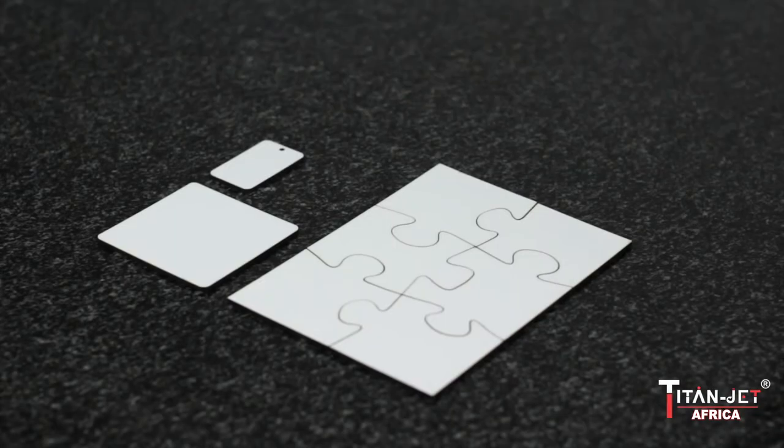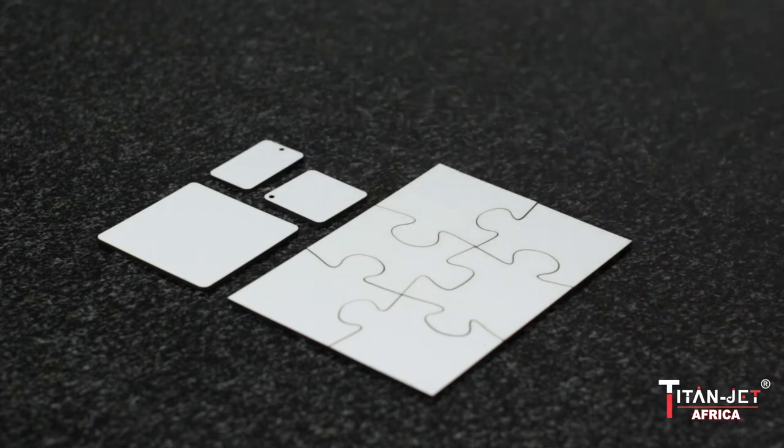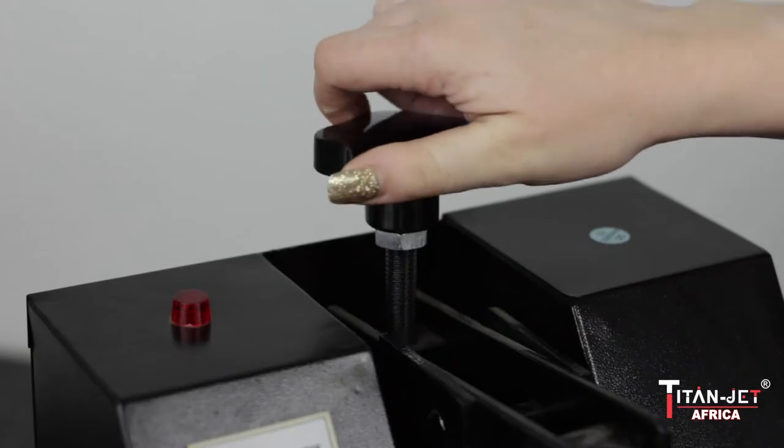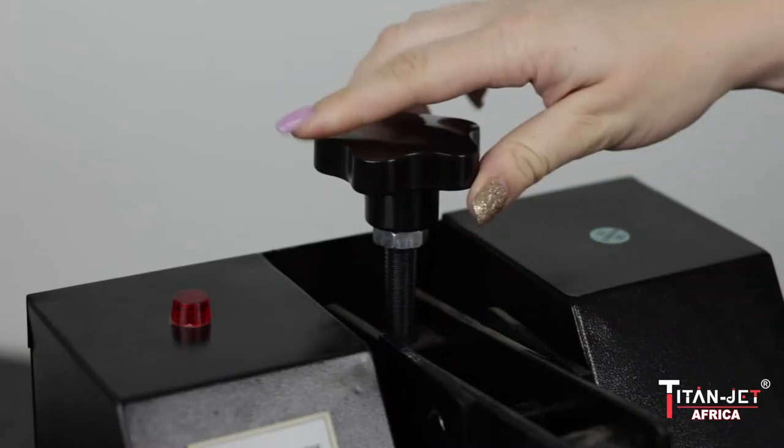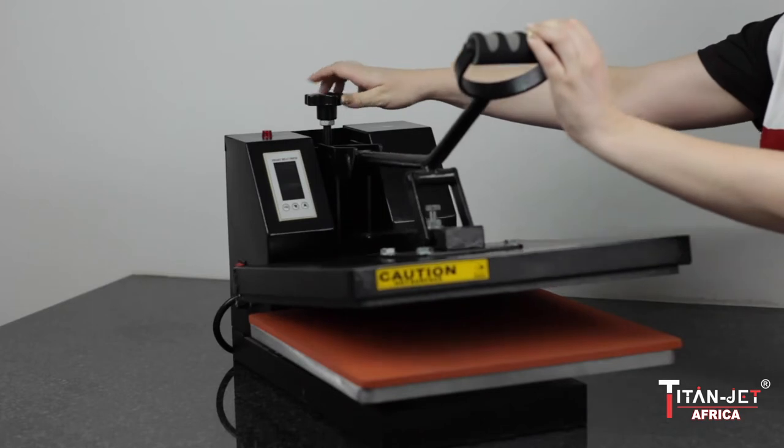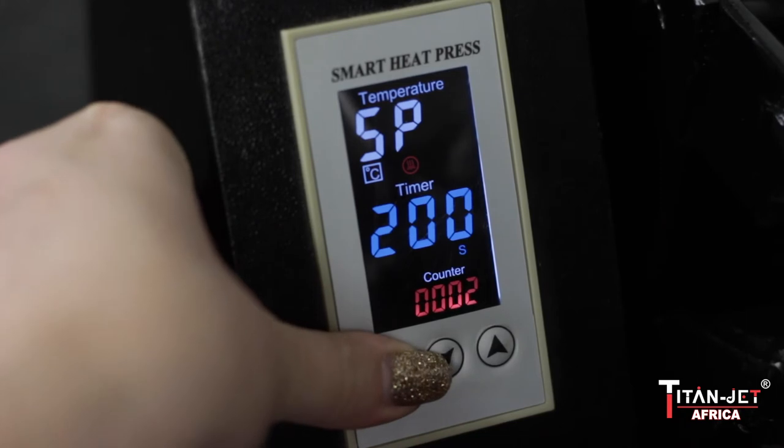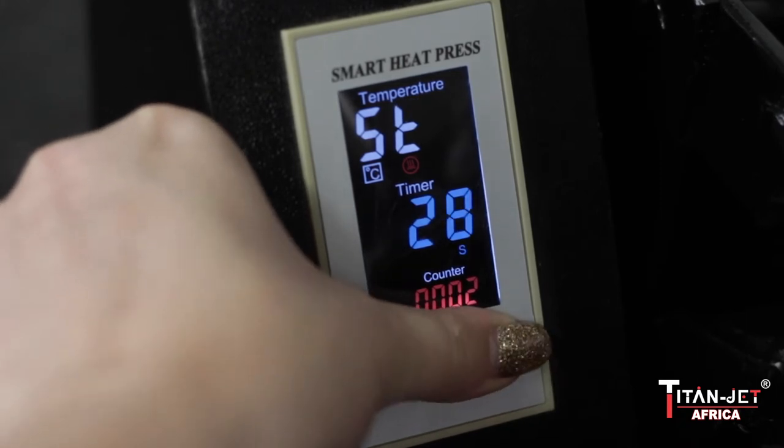For the purpose of this video we will show you how to sublimate on MDF wood. Take a flat heat press and make sure the pressure is desirable. Set the temperature to 200 degrees celsius and the time to 30 seconds.